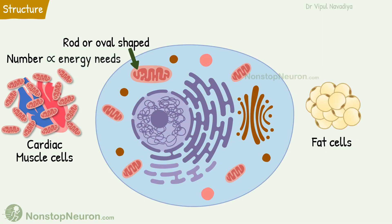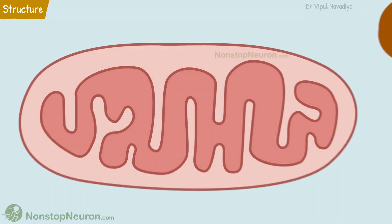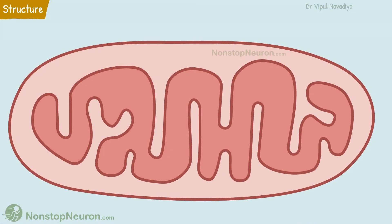And fat cells require less energy, so they have fewer mitochondria. Now let's have a closer look at the mitochondria. It is made up of a double membrane.